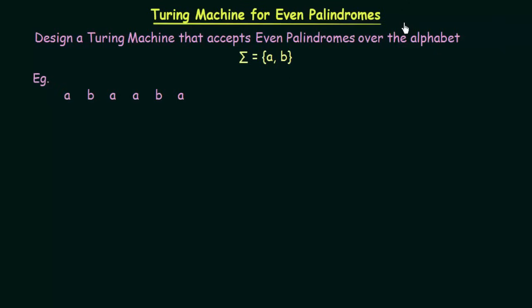In the previous lectures, we have been discussing about Turing machines. In this lecture, we will be seeing another example of Turing machines where we will try to design a Turing machine for even palindromes. Our task is to design a Turing machine that accepts even palindromes over the alphabet A, B.